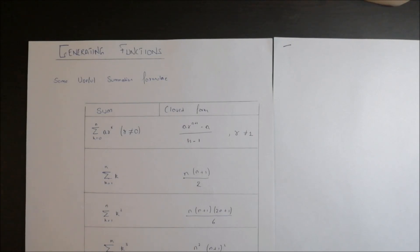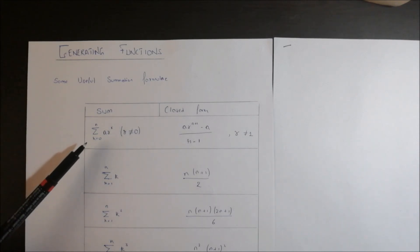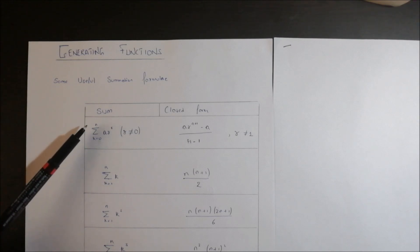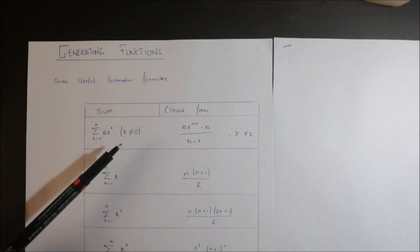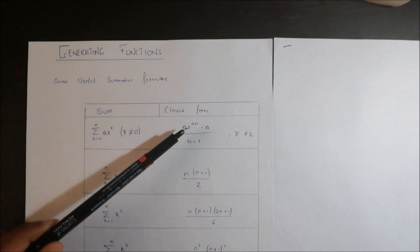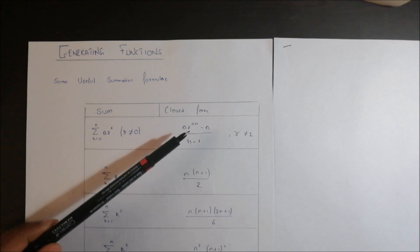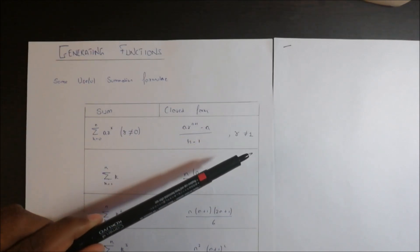Hi guys, in this video lecture we will look at some summation formulas which will be helpful in further lectures. Starting from the first formula: summation of k equals 0 to n of a·r^k, where r is not equal to 0. The closed form of this series is a·r^(n+1) minus a, upon r minus 1, where r is not equal to 1.